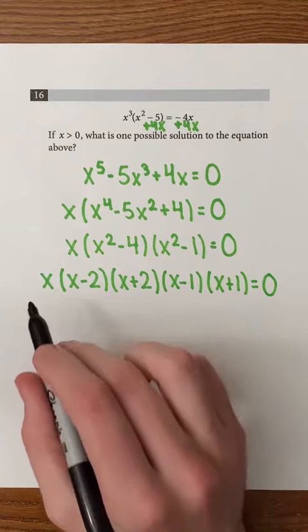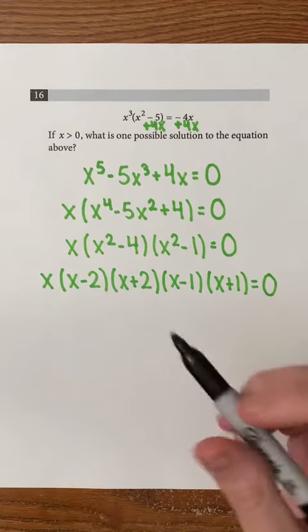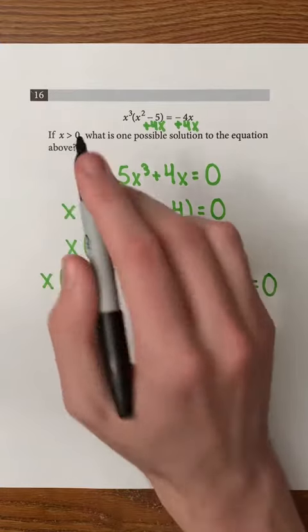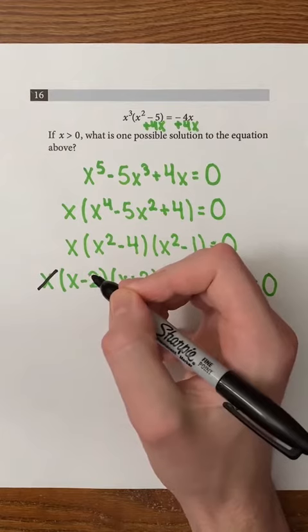For example, if we set x equal to 0, we can see that 0 is a possible solution. But we're looking for a solution that's greater than 0. And 0 is not greater than 0, therefore, we're going to ignore x.